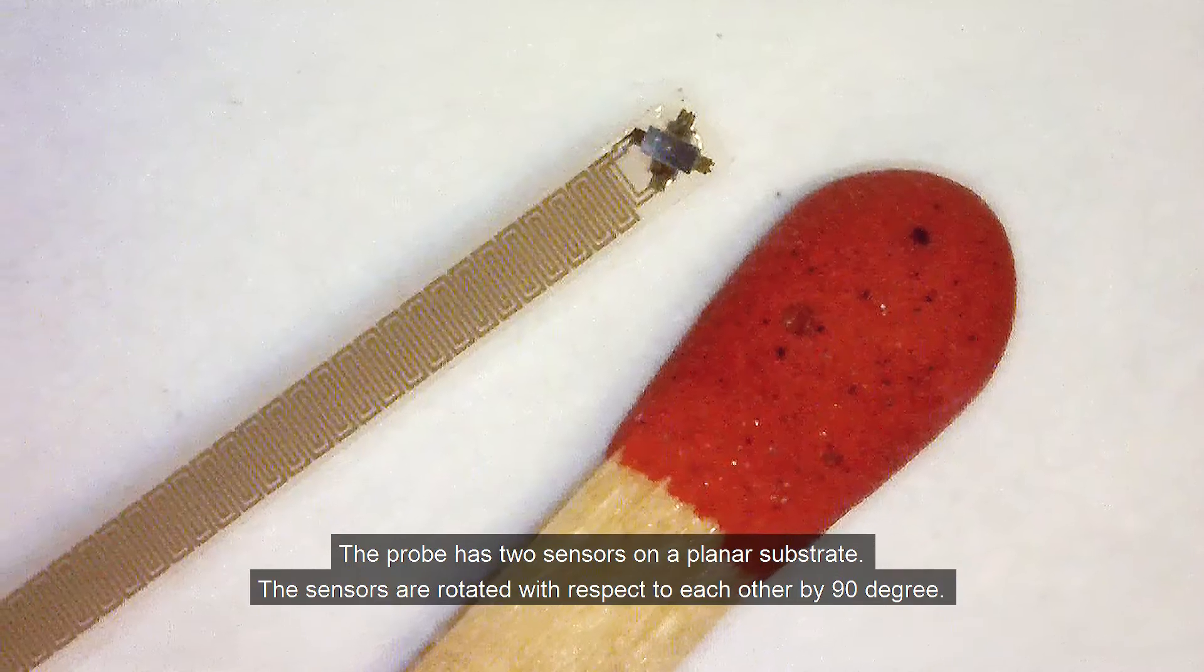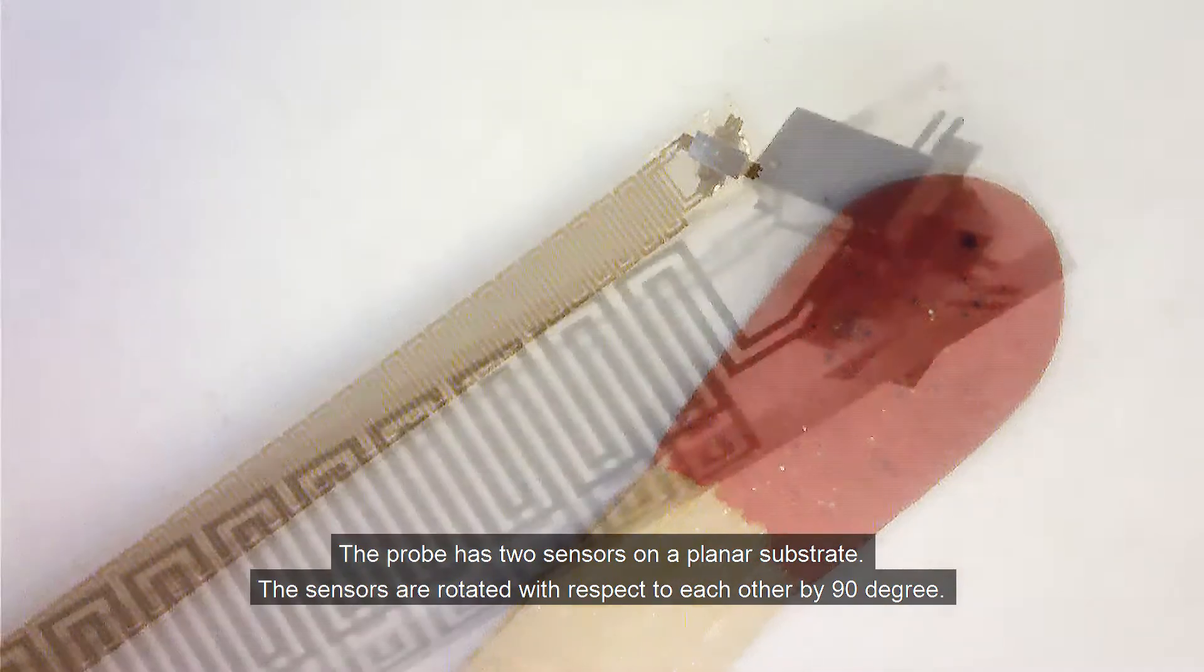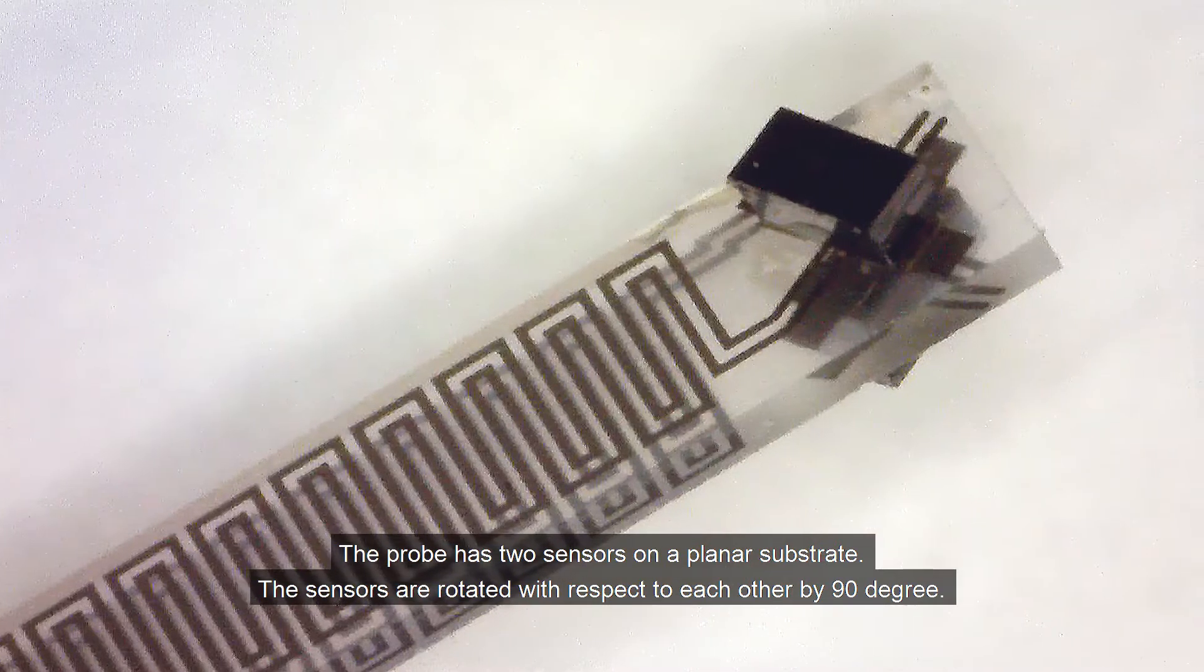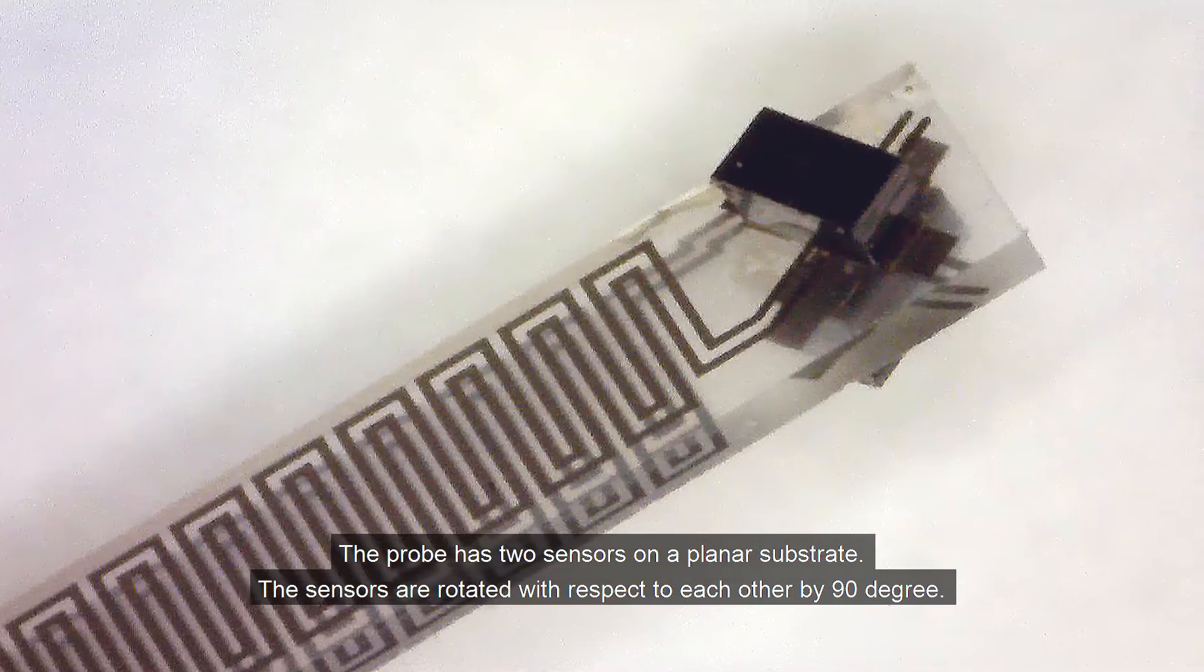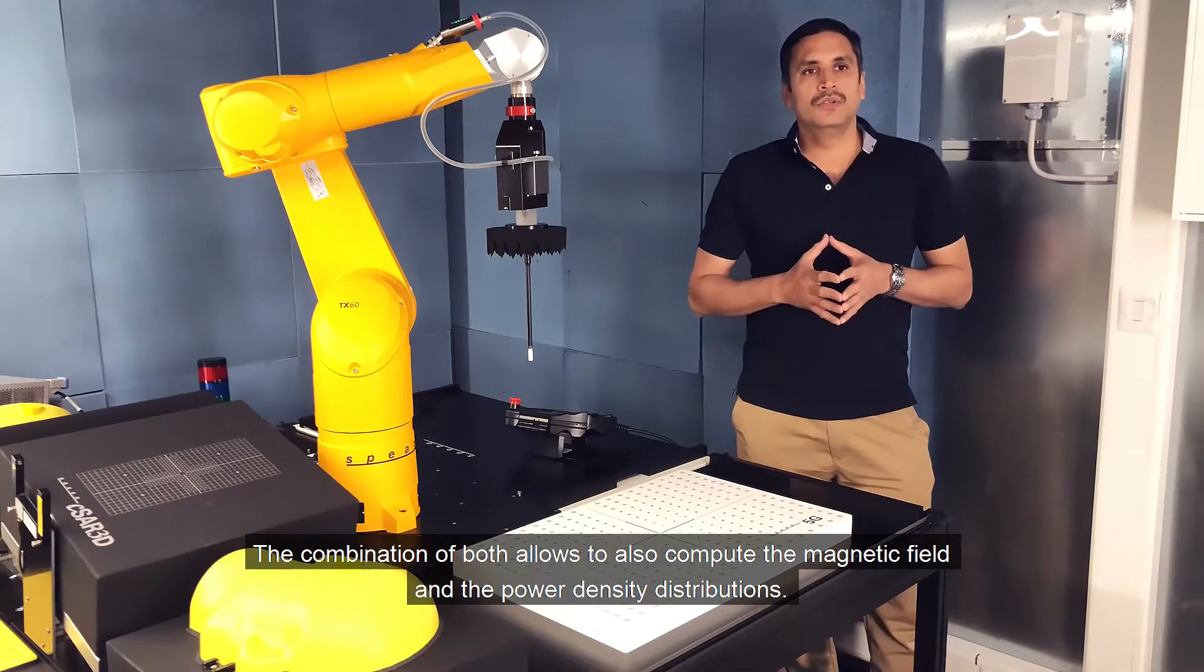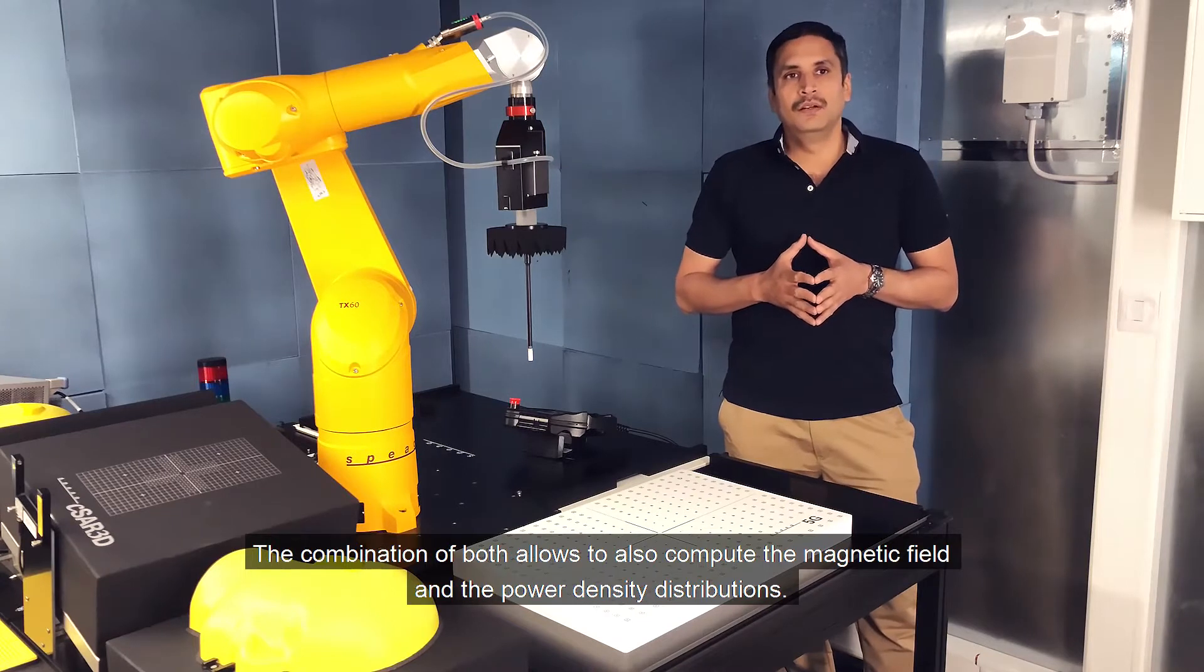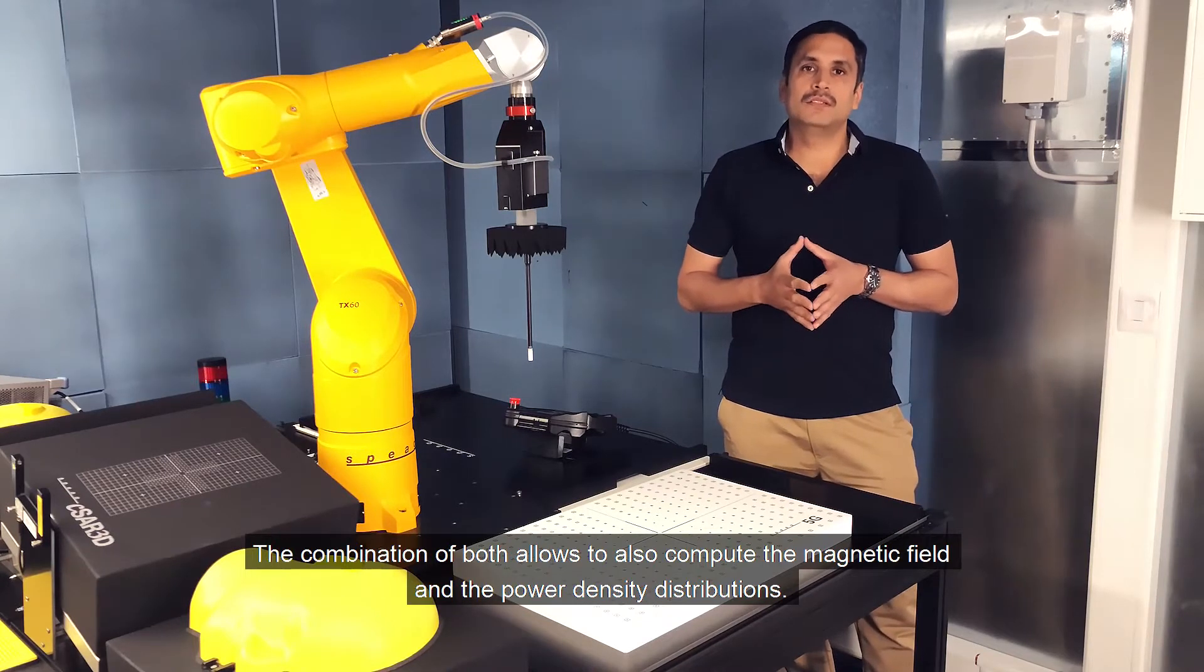The probe has two sensors on a planar substrate. The sensors are rotated with respect to each other by 90 degrees. The combination of both allows to also compute the magnetic field and the power density distributions.